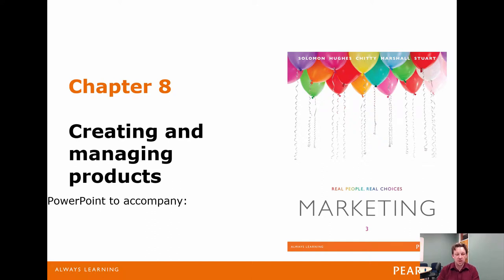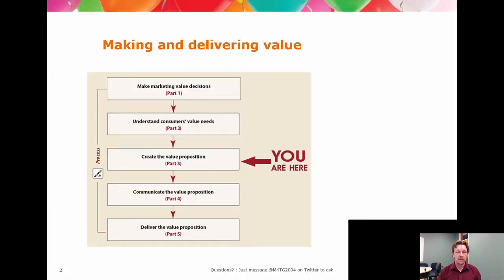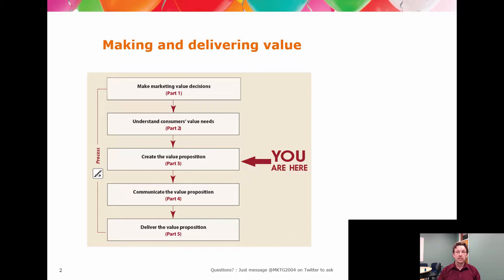Welcome to Chapter 8. We're now switching over to the third shift in the text. We've gone from looking at marketing from the perspective of the organization, to understanding the consumer, to now acting on that understanding and bringing together both the capacity of the firm and the knowledge and insight we have into the customer to say: what is the offer of value we can make to the market?